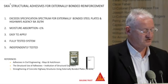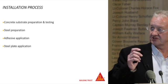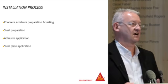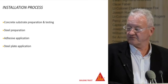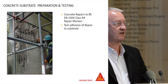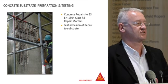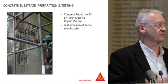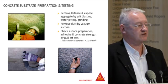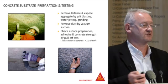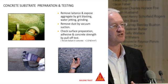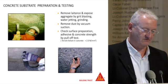Looking at the installation process: first is preparation of the substrate — the concrete. Then preparation of the steel plates, followed by the adhesive, then installation of the plates into position. The first step is to test the concrete. Any repairs must be carried out to BS 1504, generally using Class R4 mortars — they have to be classified as structural repairs and can be hand-applied, machine-applied or cast in situ. Then the laitance is removed from the concrete to expose the aggregate, generally done by grit blasting or high-pressure water hydro-demolition under very controlled conditions.